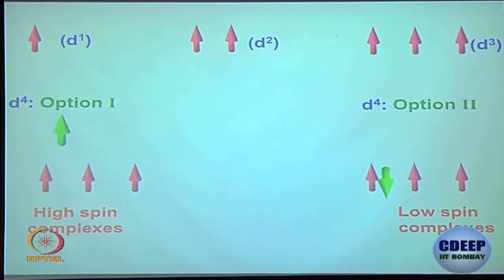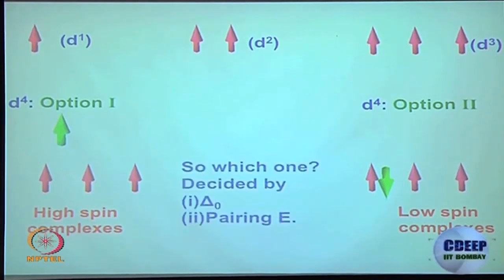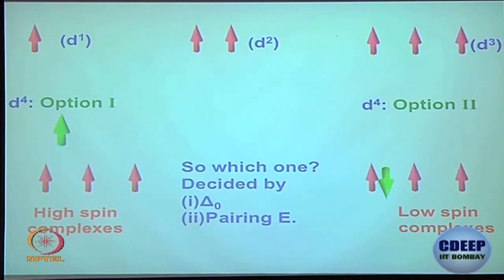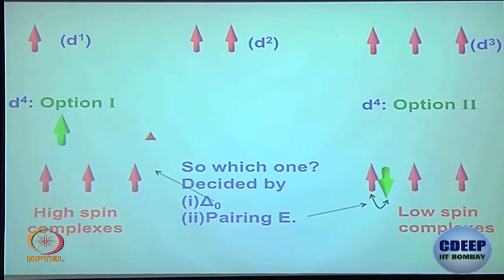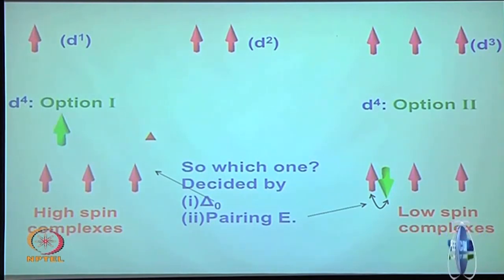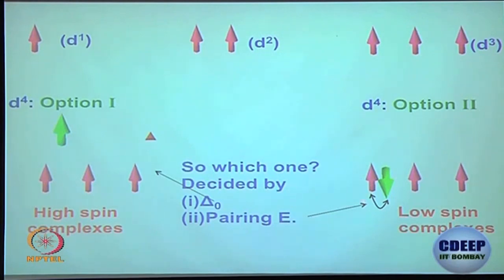It is not complicated. If delta₀ or 10 Dq — the gap between T2g and Eg — is small, then T2g³ Eg¹ will result because the electron prefers to remain unpaired following Hund's rule. For T2g⁴ to occur, you must pair two electrons, which costs pairing energy. If the pairing energy is less than delta₀, then the low spin configuration T2g⁴ Eg⁰ is preferred.